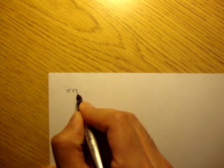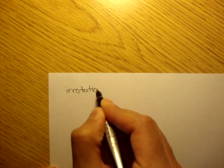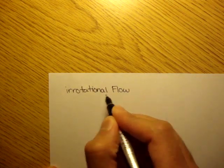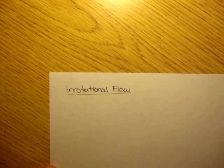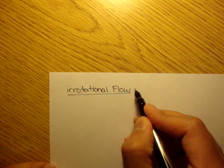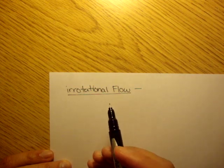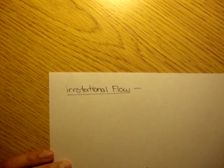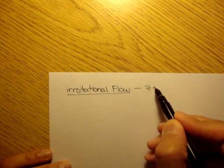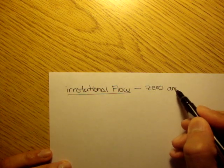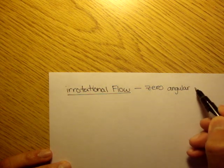The very first definition we're going to define is irrotational flow. An irrotational flow — just by looking at the word irrotational — it's not rotating. Nothing's rotating within this flow field. And all that means is that there's zero angular rotation.